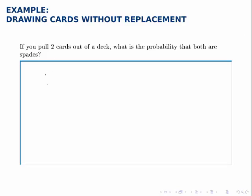When the events are not independent, the probability of two things happening together is the probability of the first thing happening times the probability that the second thing happens given that the first one already occurred.